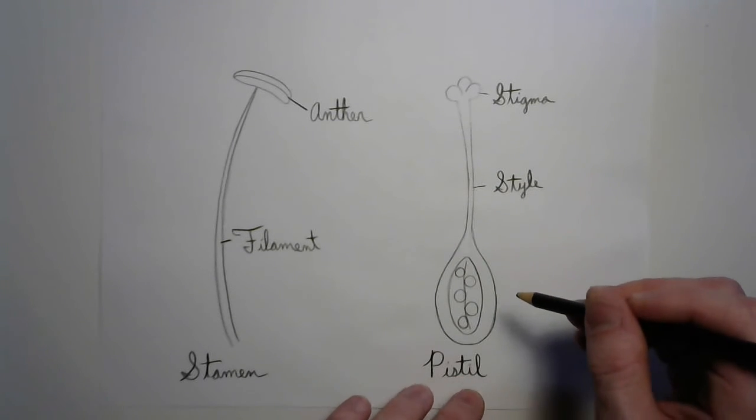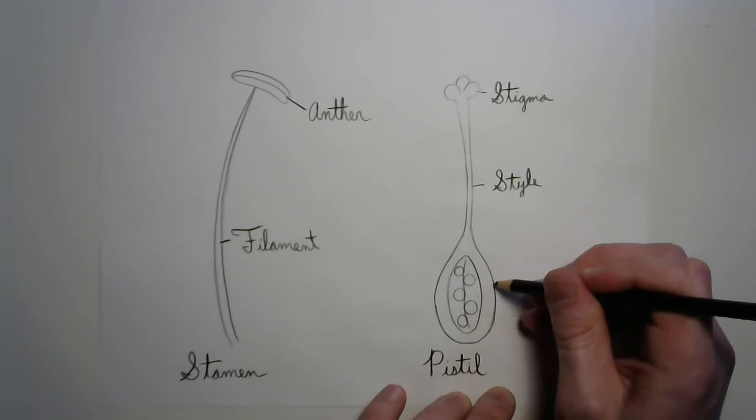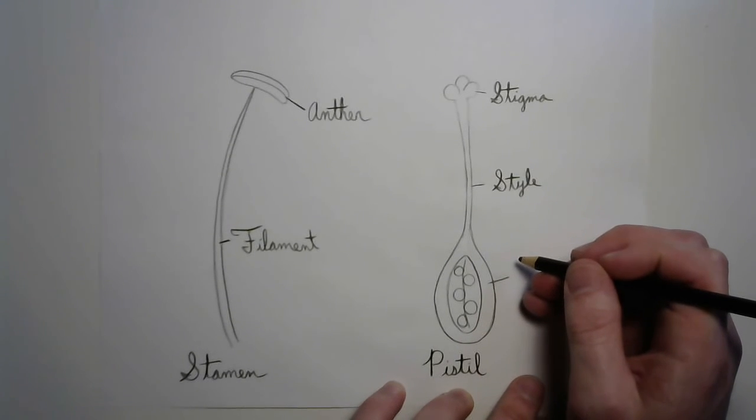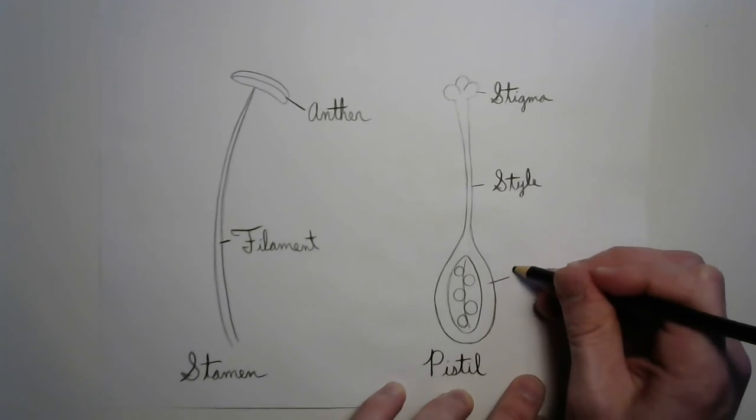At the bottom of the pistil is the ovary. That comes from the word ovum. It's a Latin word, which means egg.